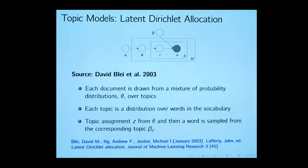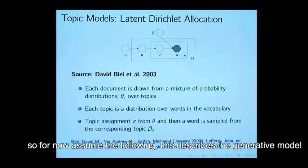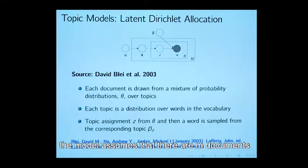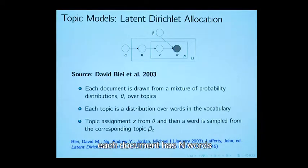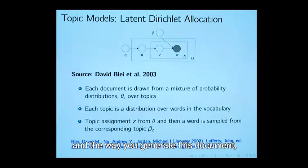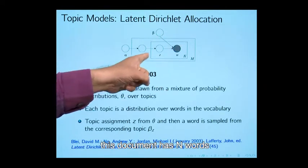This model assumes the following. You see on your screen what is known as a plate diagram of a graphical model. If you are confused what graphical model is, I would recommend some textbooks. For now assume the following, this describes the generative model. The model assumes that there are m documents, each document has n words, capital N words. The way you generate a document, this document has n words, remember.